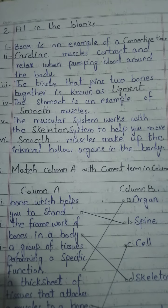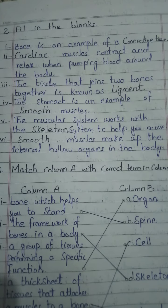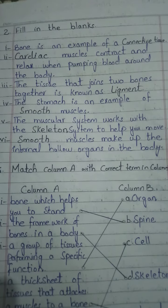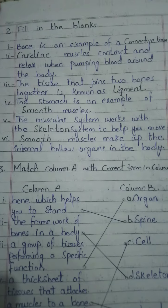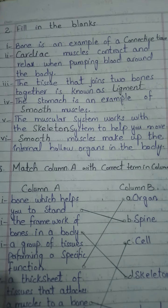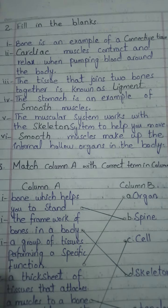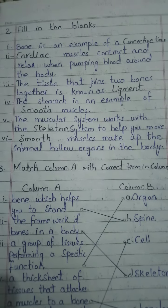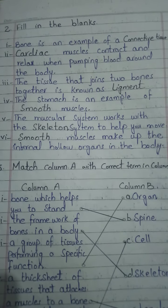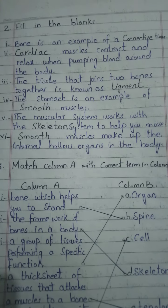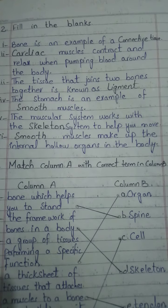The third blank: the tissue that joins two bones together is known as ligament. The fourth blank: the stomach is an example of smooth muscles.